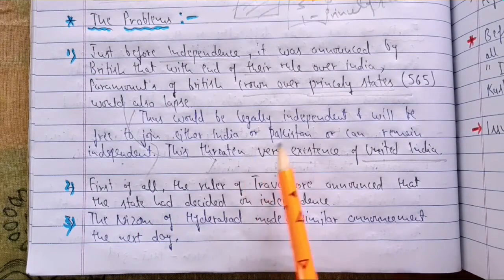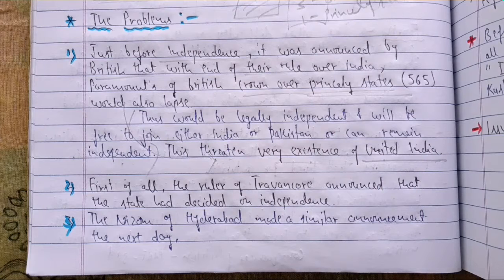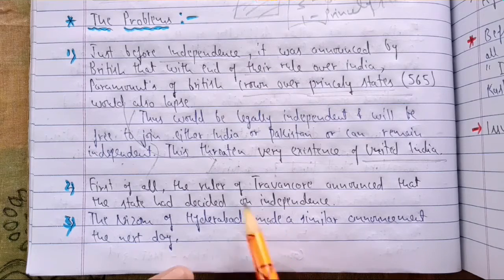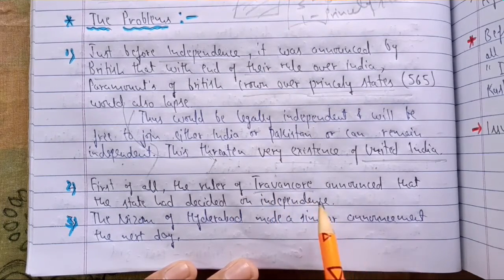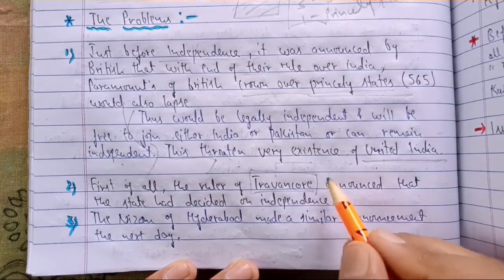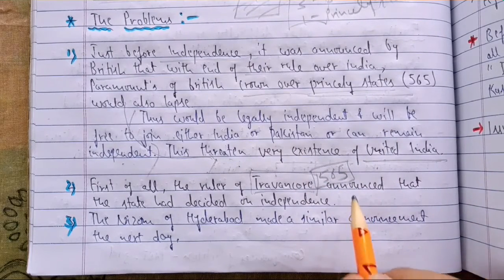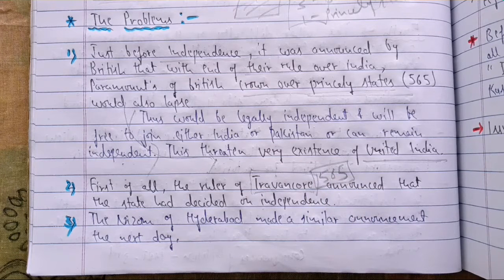As soon as this provision was announced, the ruler of Travancore - which is currently in Kerala, a princely state in the south-western part of India - announced that the state had decided on independence. There were 565 princely states in total, and it was the biggest challenge to integrate and merge all of them with the Indian union through negotiation. The ruler of Travancore announced he wanted to be independent and make a separate nation.